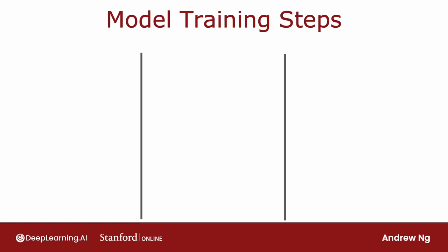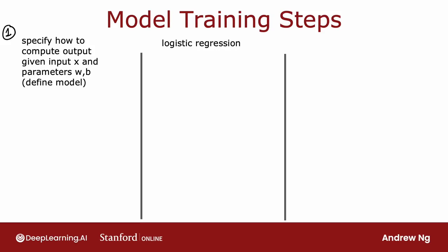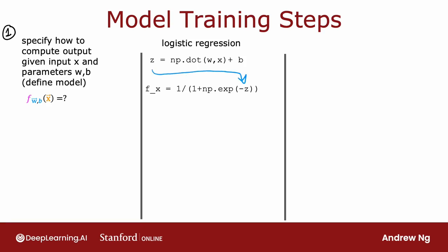Before looking at the details of training a neural network, let's recall how you had trained a logistic regression model in the previous course. Step 1 was to specify how to compute the output given the input feature x and the parameters w and b. The logistic regression function predicts f of x equals g, the sigmoid function applied to w dot x plus b, which is 1 over 1 plus e to the negative z, where z is the dot product of w and x plus b.